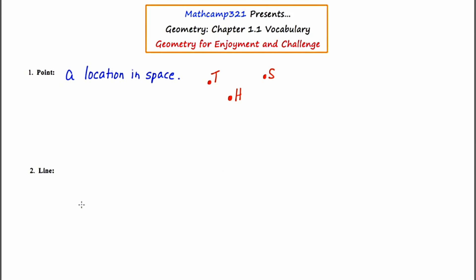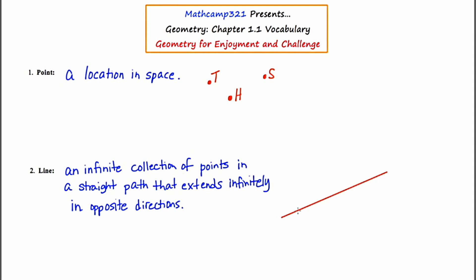Our second term is line. A line is a collection of infinitely many points in a straight path that extend infinitely in opposite directions. I'm going to draw an example of a line, and to show that it extends infinitely in opposite directions, I'm going to put arrowheads on either side of this line.